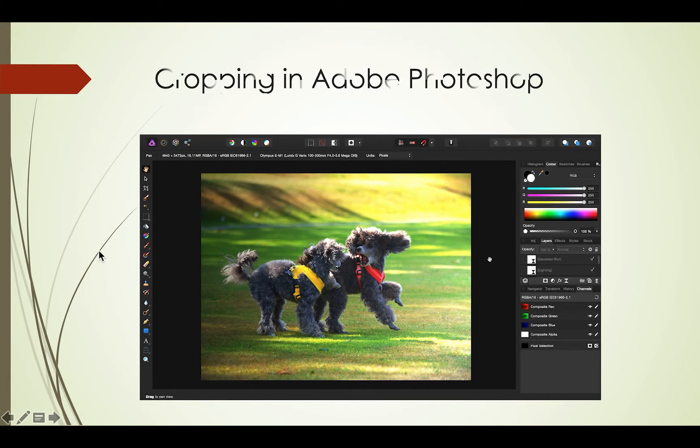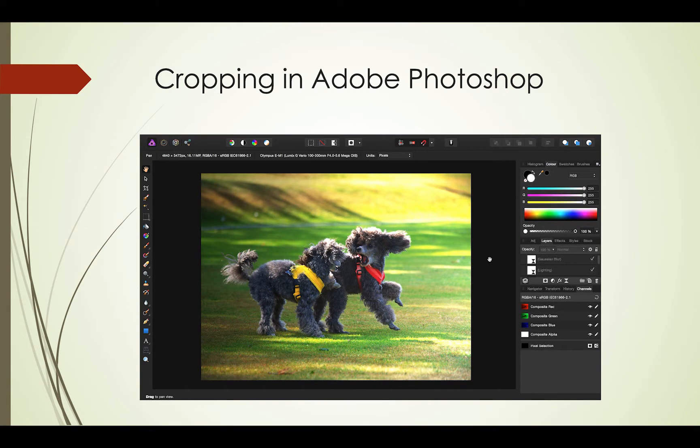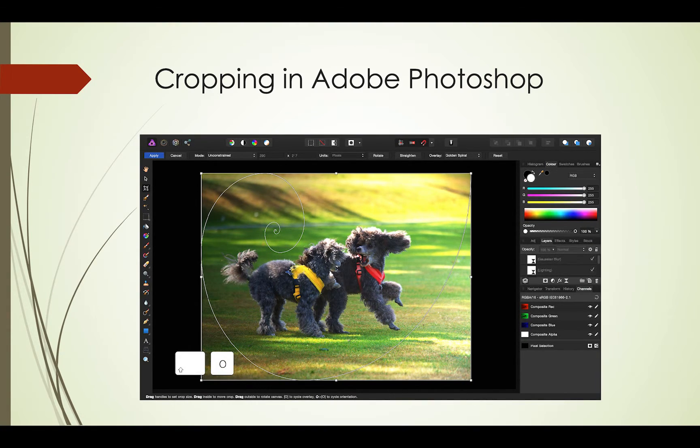Welcome to Affinity Photo. I just want to give you a quick tip for when you're using the golden spiral overlay when cropping. So if we go ahead, select the crop tool and select the golden spiral overlay here. Depending on the composition of your image, you might want to have the spiral in another corner. So for example, I want to align the spiral point with this dog's head here. All you need to do is hold down the shift key and tap O on the keyboard.